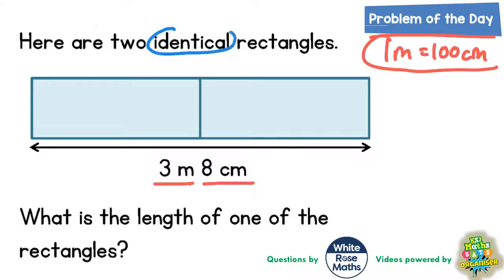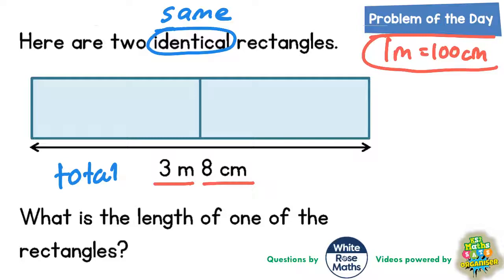We get told that there are two identical rectangles. The word 'identical' just means they are exactly the same. Here are two exactly the same rectangles, the same size. We get told that the total distance all the way across the two rectangles is three meters and eight centimeters. Since we've got mixed units — meters and centimeters — we should express that distance just in centimeters.